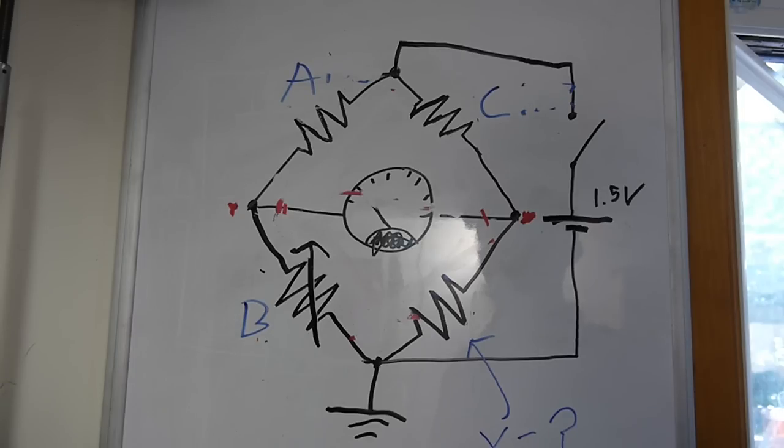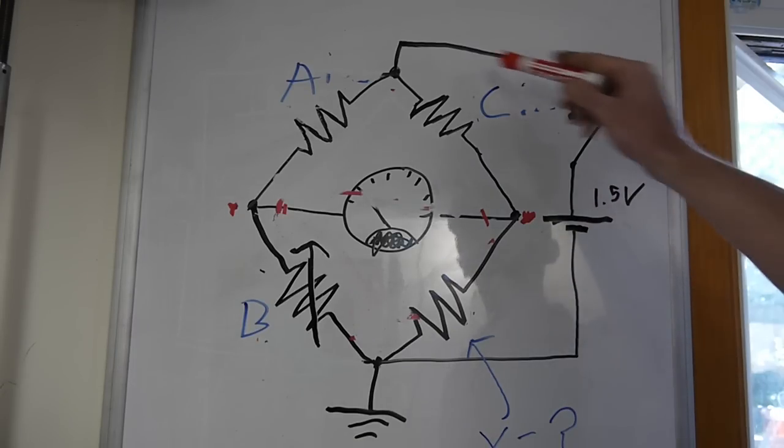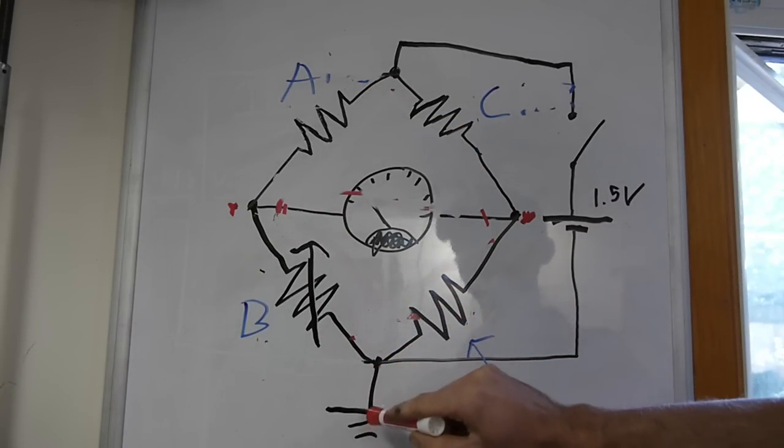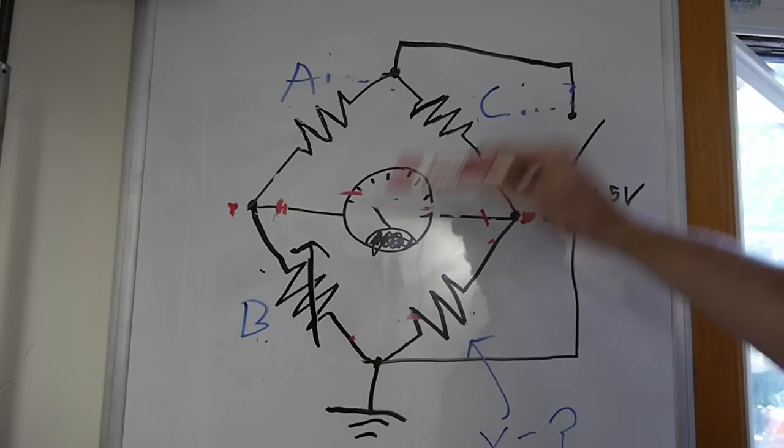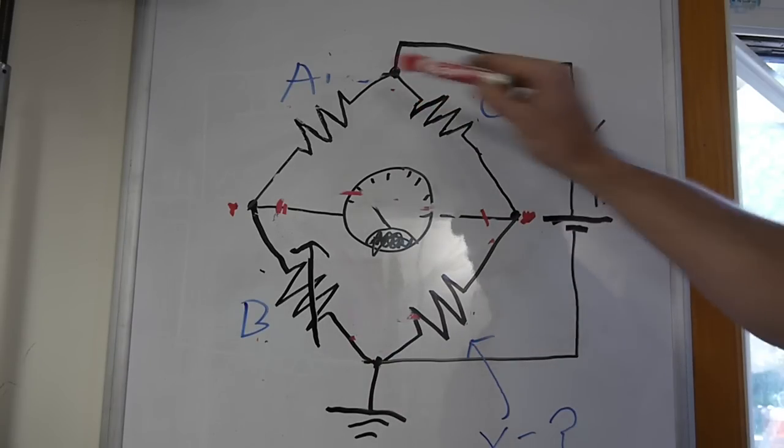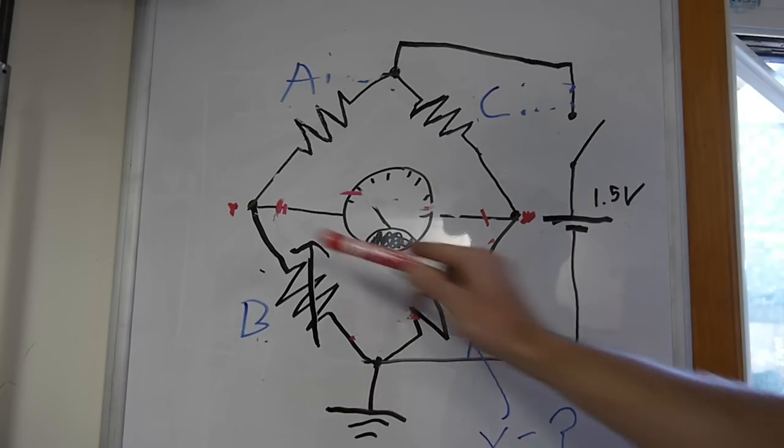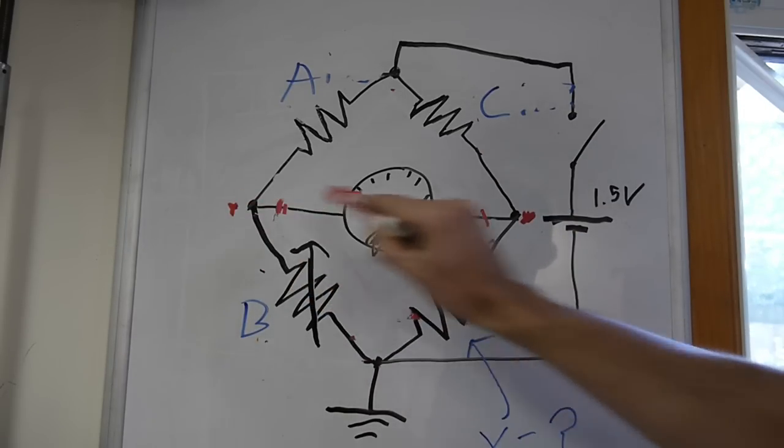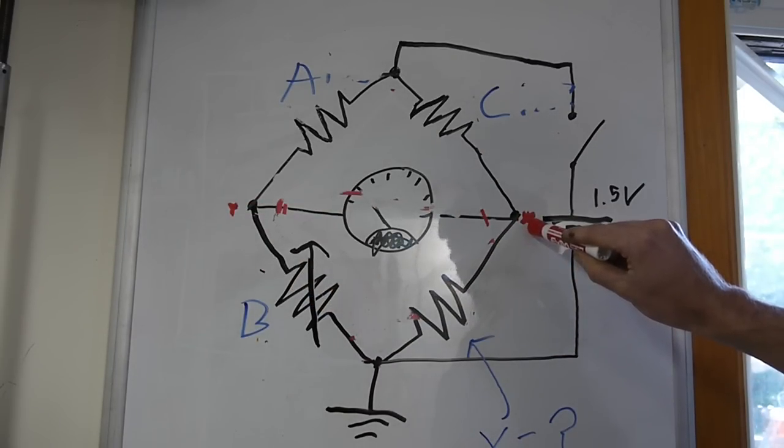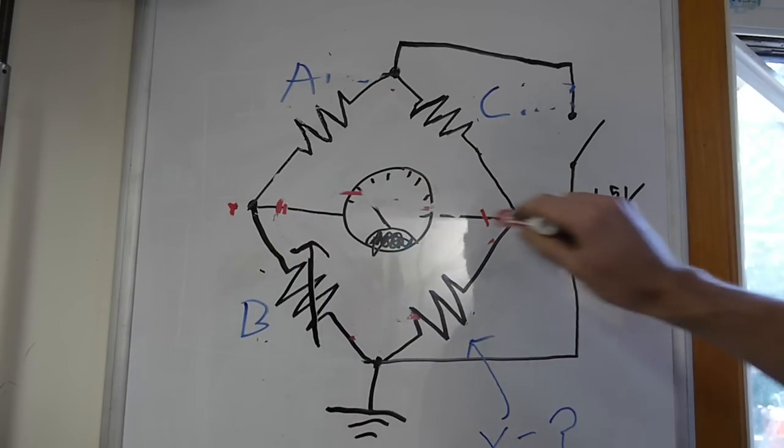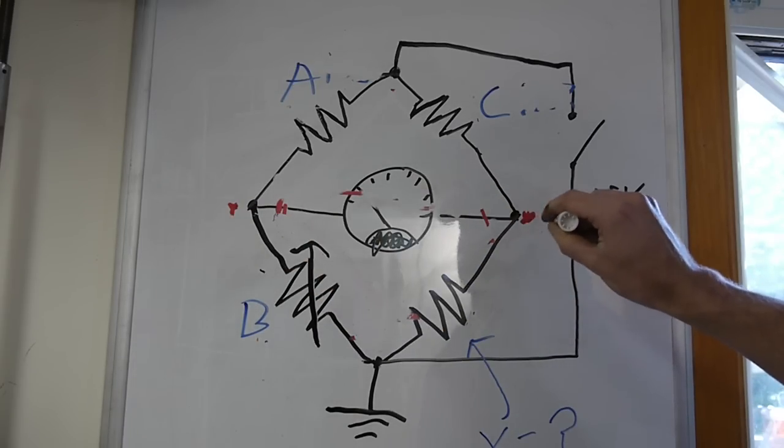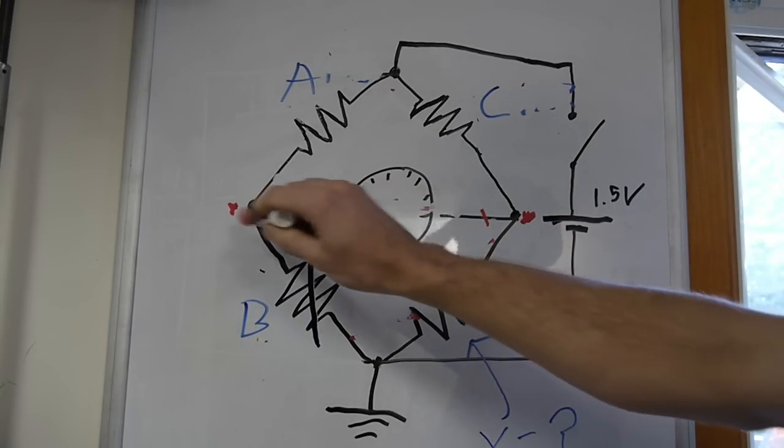So how do we do this? Well, you can see that A and B form a voltage divider, and so do C and X. When the ratios of these two voltage dividers are the same, then the same voltage will be present across these two nodes. And if the same voltage is present at both these nodes, then no current will flow through the galvanometer.